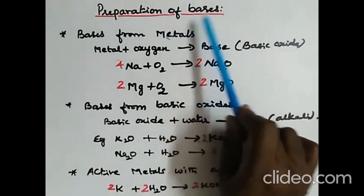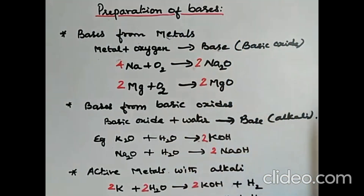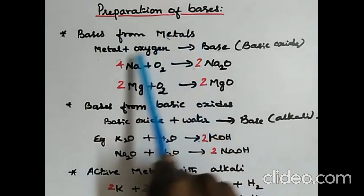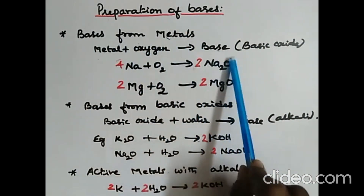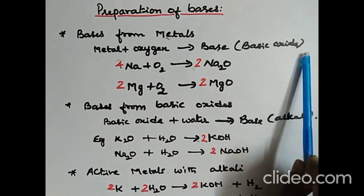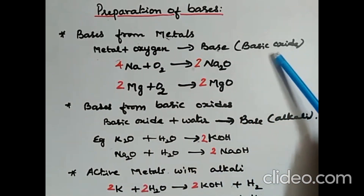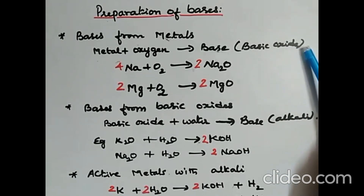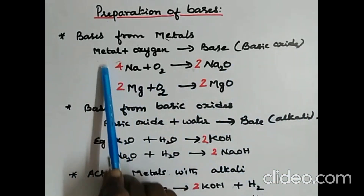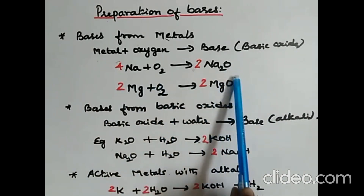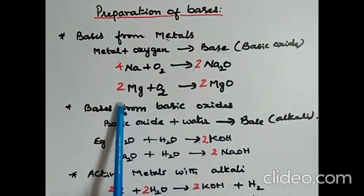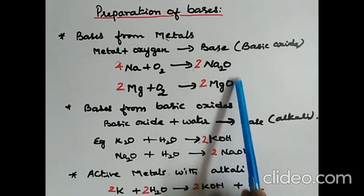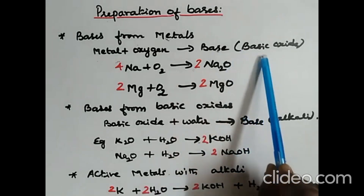The next is preparation of bases. Bases can be prepared by various methods. First, bases from metals: metal plus oxygen produces a basic oxide. Non-metallic oxides are called acidic oxides; metallic oxides are called basic oxides. Example: sodium plus oxygen gives sodium oxide; magnesium plus oxygen gives magnesium oxide — both are basic oxides.